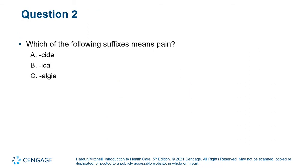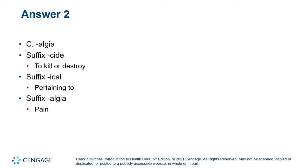Which of the following suffixes means pain? It is C — 'algea.' 'Cide' means to kill or destroy, 'ical' means pertaining to, but 'algea' means pain.